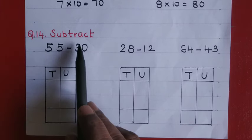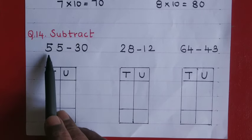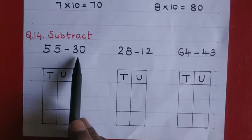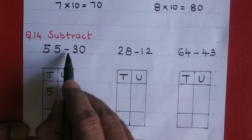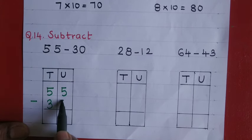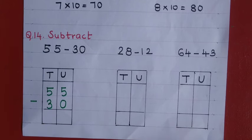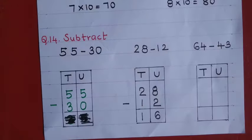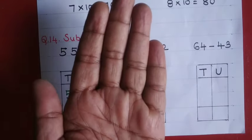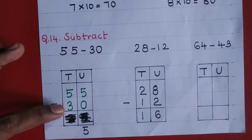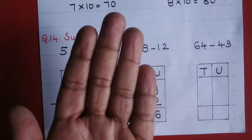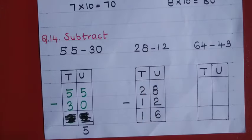Question number fourteen: subtract. Fifty five minus thirty. The sum is given horizontally, so arrange it vertically first. Write fifty five, then minus thirty below it. Begin with the unit place: five minus zero — if you remove zero from five, five remains, write five. Then five minus three — remove three from five, two remain, write two. The answer is twenty five.